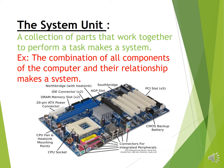A collection of parts that work together to perform a task makes a system. For example, a computer is made up of different parts: the system unit, keyboard, mouse, and monitor. These are the different parts of the system.